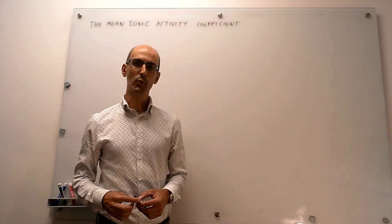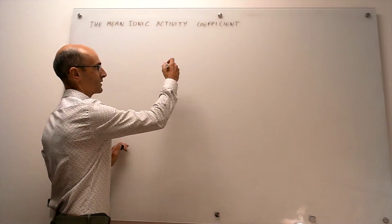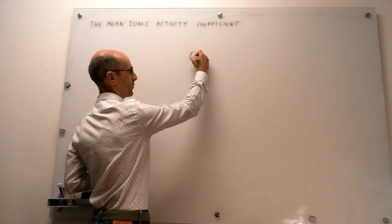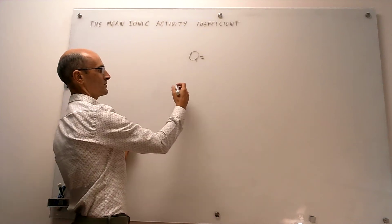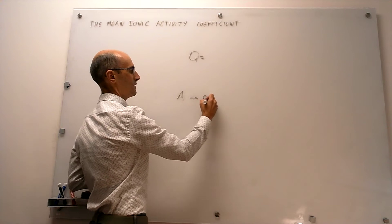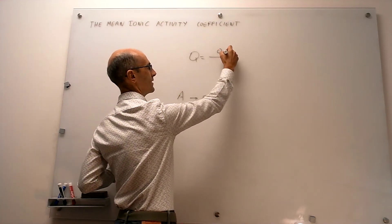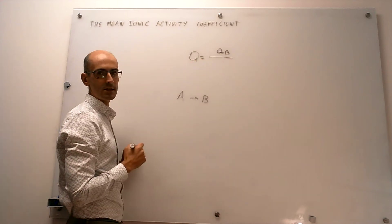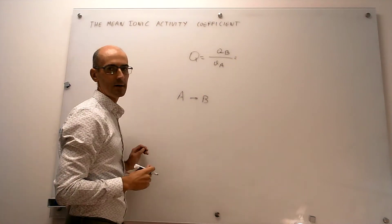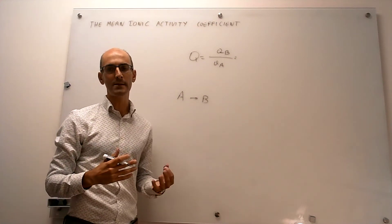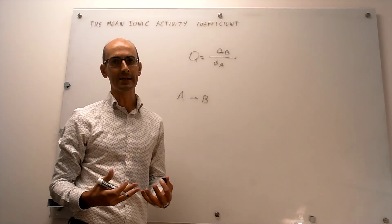When we're trying to work with equilibrium constants, reaction quotients, or similar expressions — for a reaction like A giving B — we always write these reaction quotients as the activity of B over the activity of A. Generally, we simply map these activities into useful measures of concentration if the solutions are ideal.